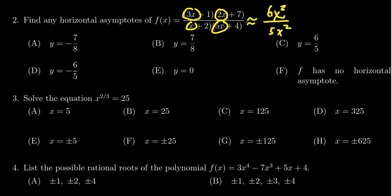We can see that the top is a square, the bottom is a square. Therefore, this is a balanced rational function. The x squares actually cancel out, and we end up with 6 fifths. When you have a balanced rational function, the horizontal asymptote will be the ratio of the leading coefficients. And therefore, we see the correct answer is c.